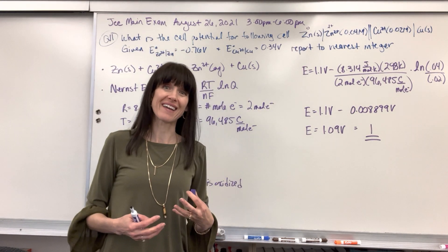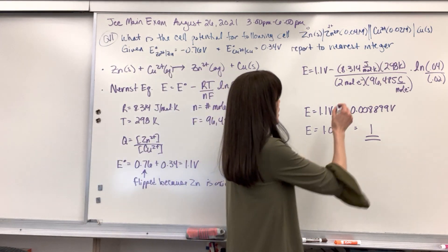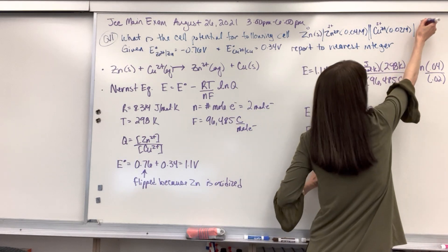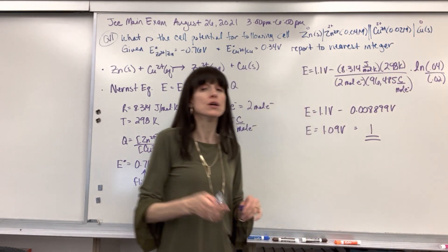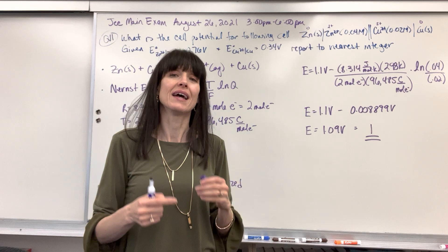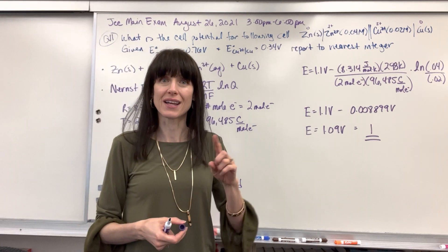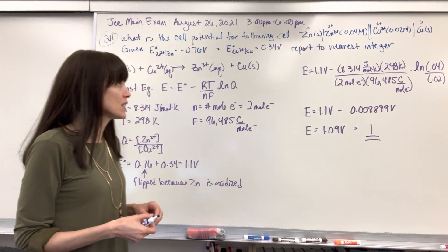If you want to double check it on the copper, we have our reactant has a two plus oxidation number and then on the product has a zero. Two plus to zero, it just gained two electrons. Gain electrons ger, gain electrons reduction.